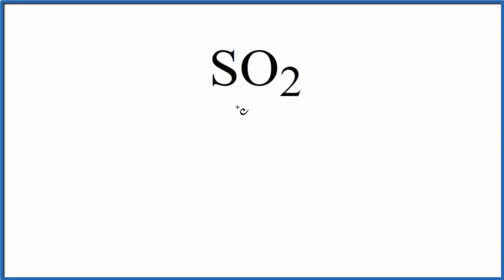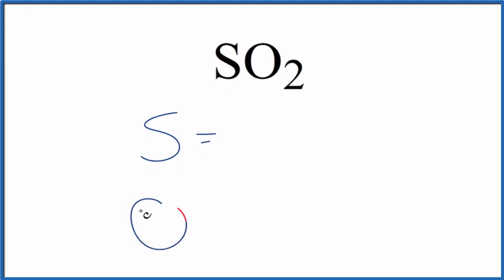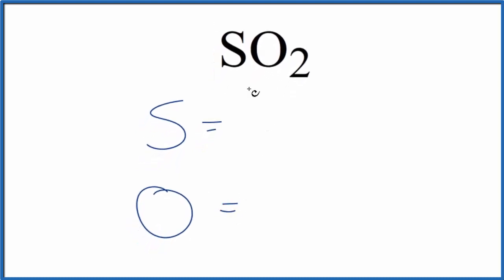In this video we'll figure out the number of atoms in SO2, this is sulfur dioxide. For sulfur dioxide let's just write S and O here, and for sulfur there's nothing written after the element symbol so we assume there's a one there.